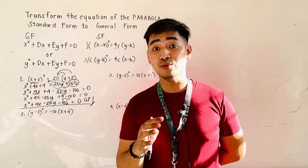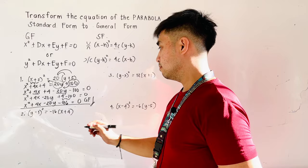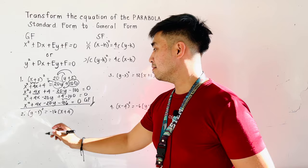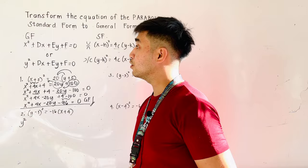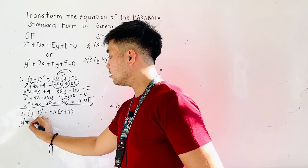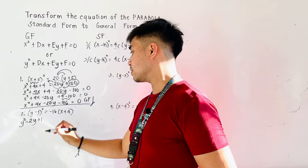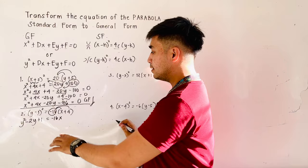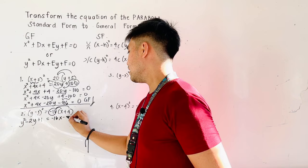All we have to do is to expand the terms inside the parenthesis. Next, we are given y minus 1 quantity squared is equal to negative 16 times the quantity x plus 4. So let us expand. y minus 1 quantity squared: y times y is y squared. Negative 1 times 2, that is negative 2 times y, therefore that is minus 2y. Negative 1 times negative 1, that is plus 1. Then distribute negative 16: that becomes negative 16x. Negative 16 times positive 4, that is negative 64.